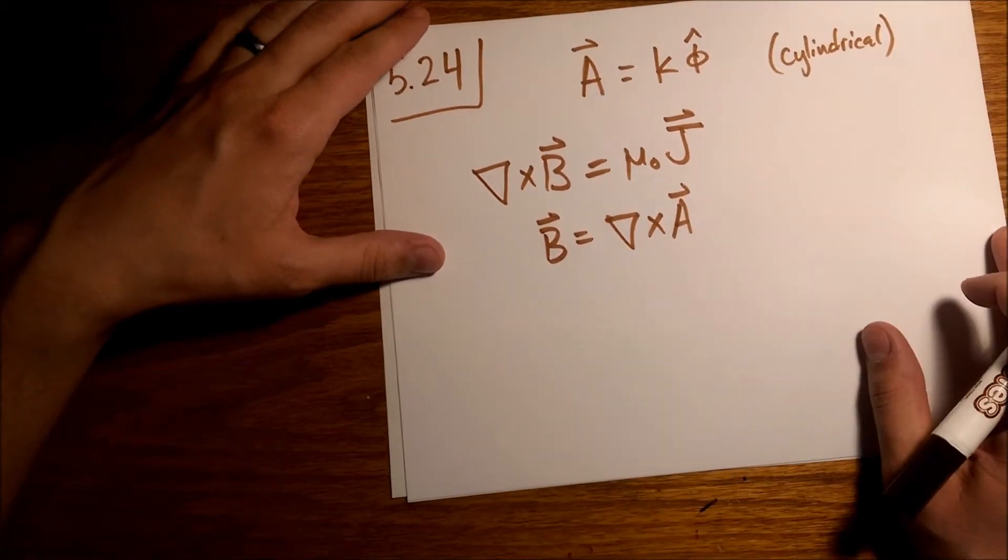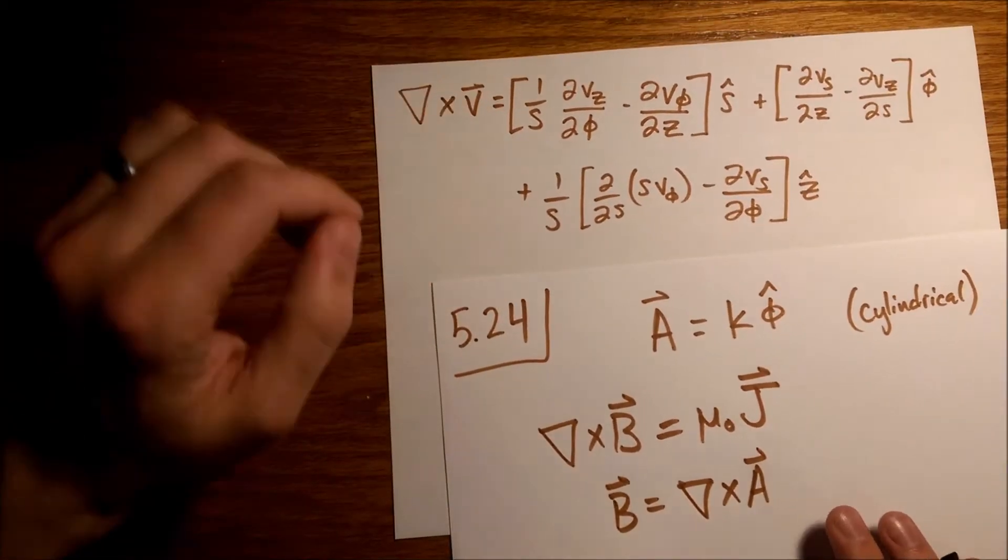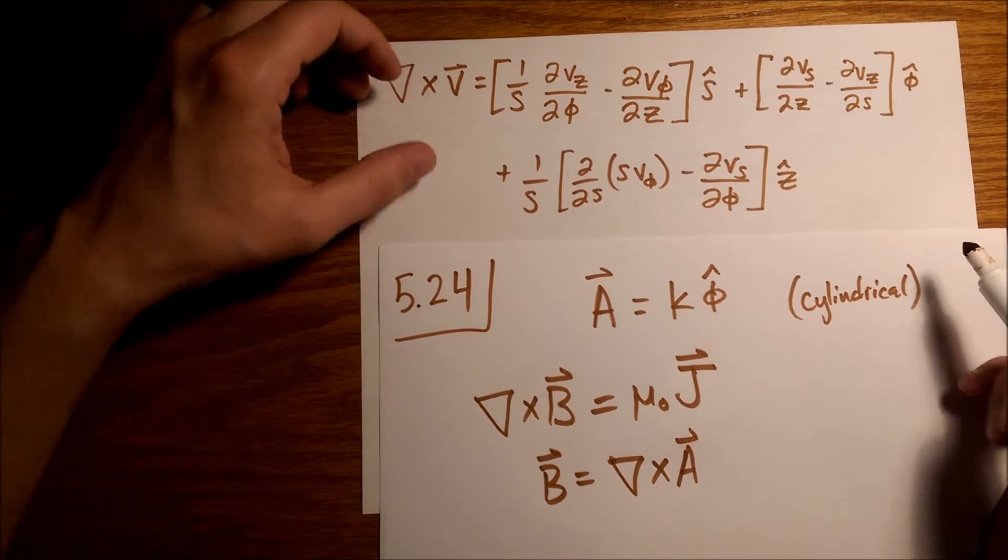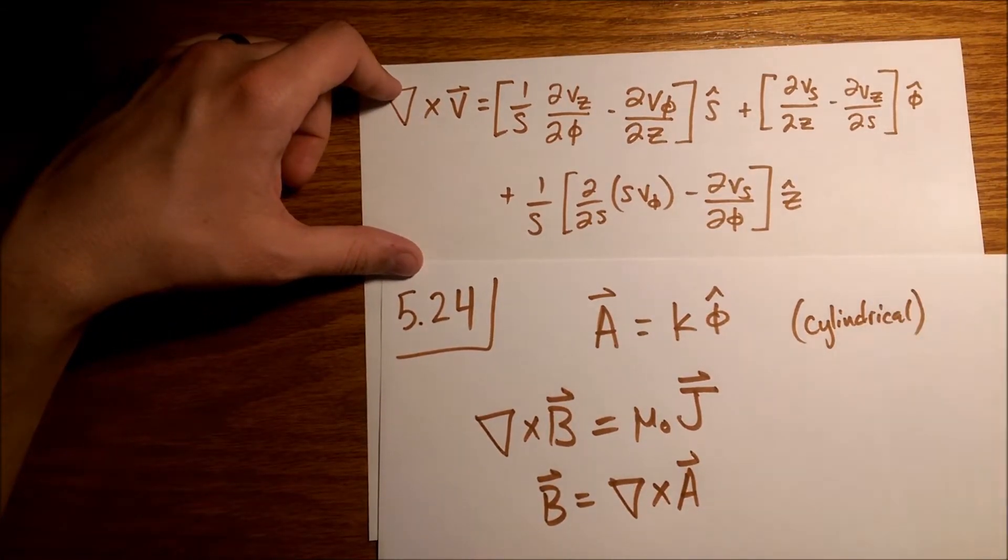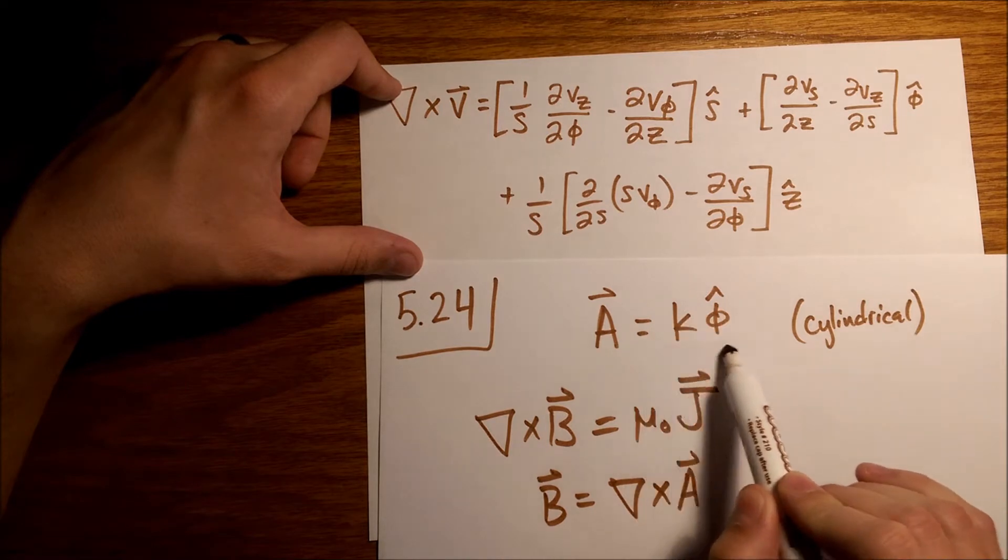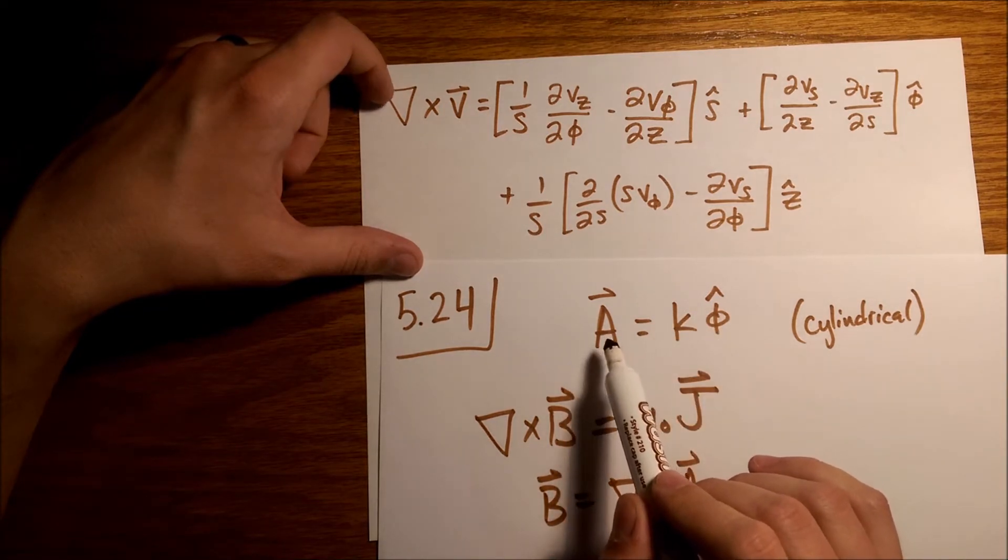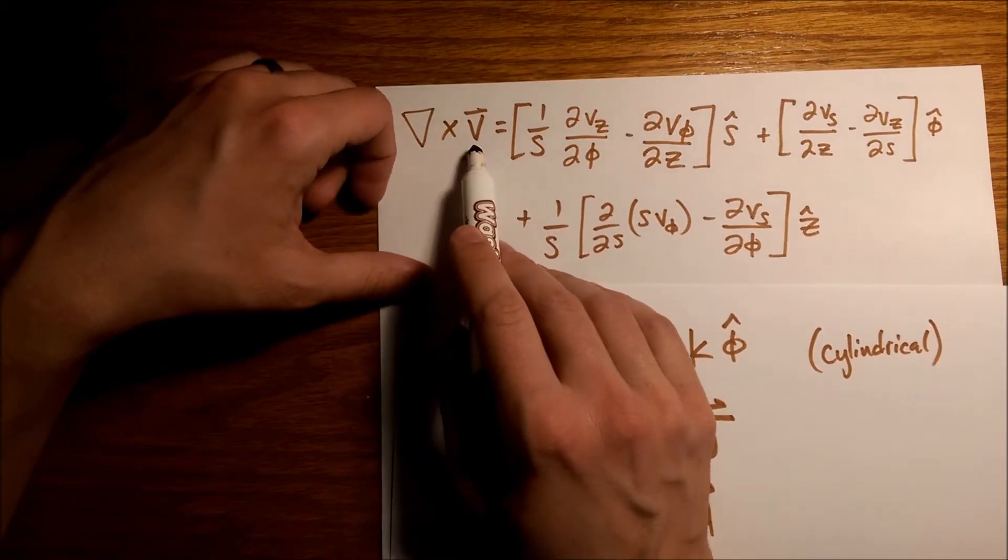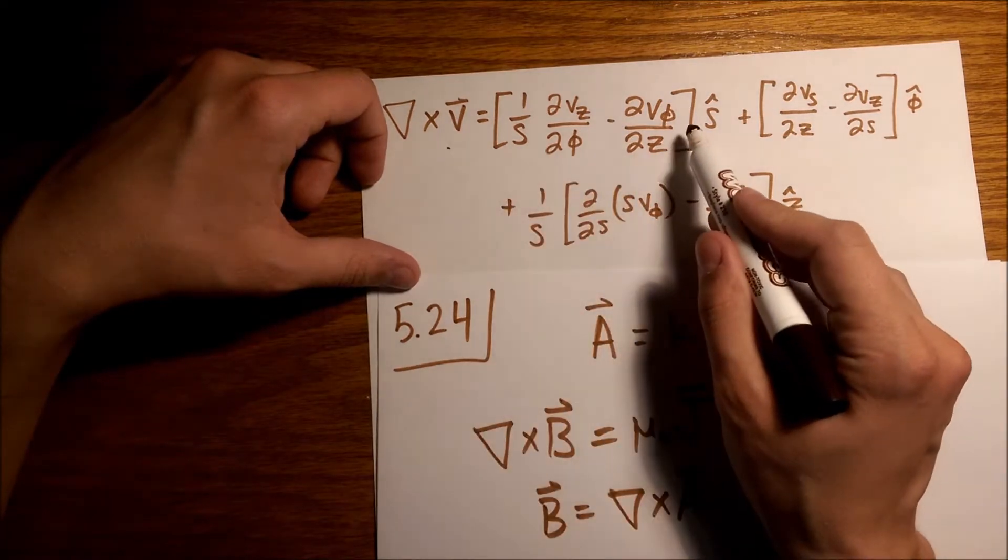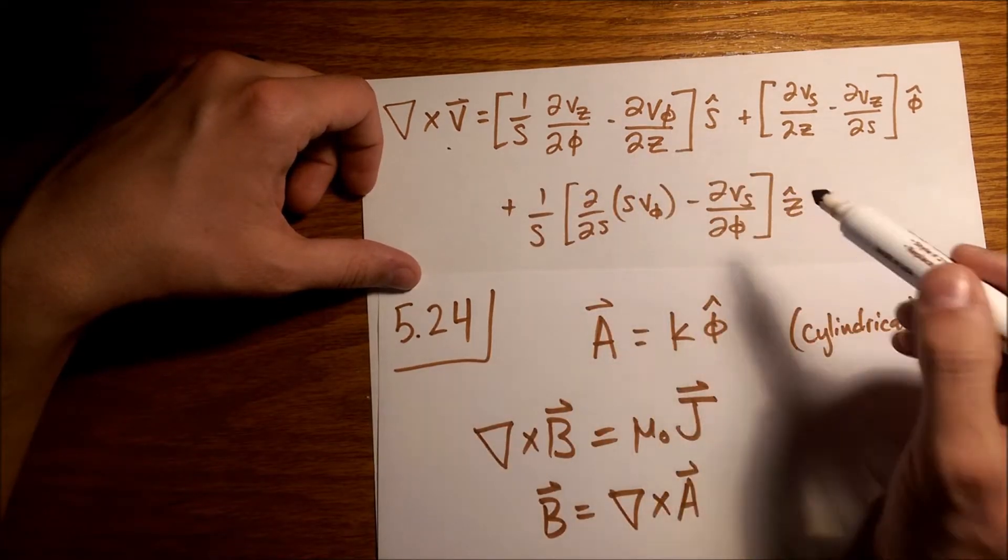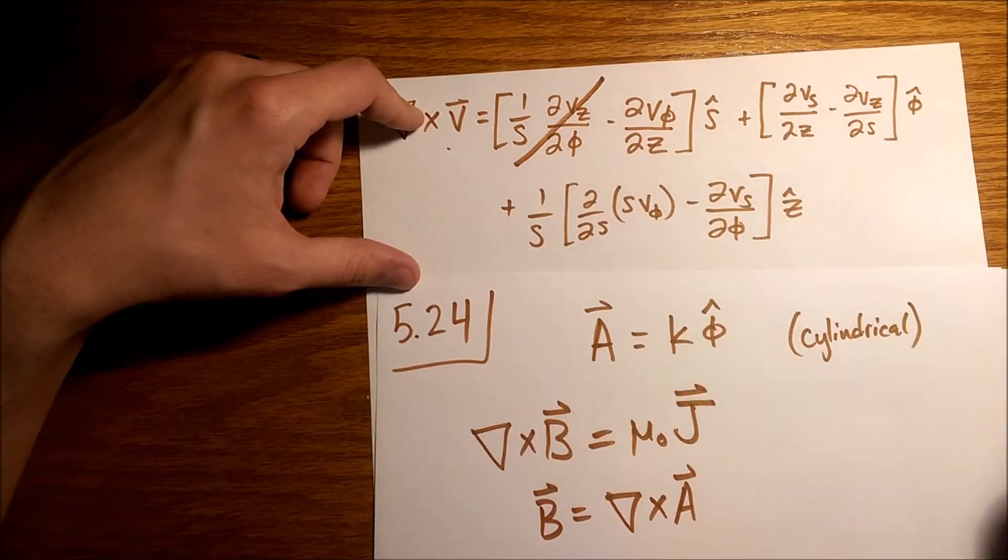Alright, so what is the curl in cylindrical coordinates? Well, I happen to have that right here. So how are we going to do this? We've got a whole bunch of partial derivatives in here, and there's only a phi hat component to this vector potential. So here, this vector v will be A. And we're going to see where is there a phi hat component. Alright, there's no z component, this term goes away.